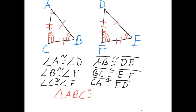So, this triangle is congruent to triangle DEF, because A is congruent to D, B is congruent to E, and C is congruent to F. Order does matter. And that's why you have to listen to my videos. Triangle ABC is congruent to triangle DEF.